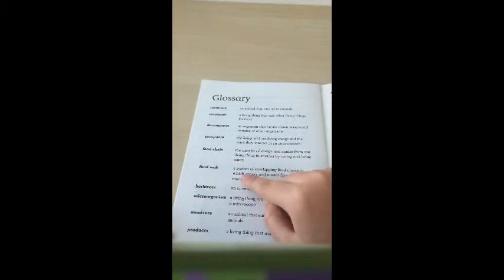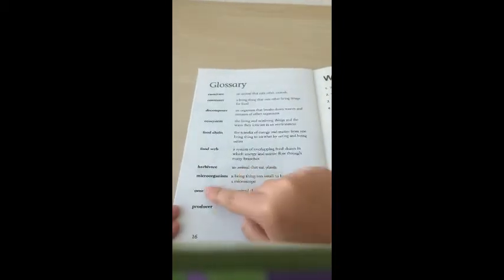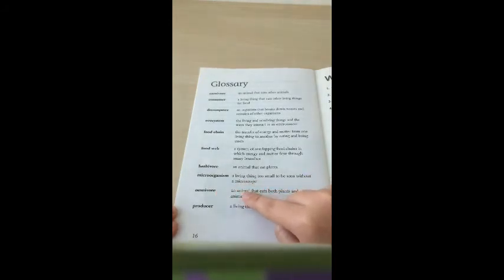Glossary. Food web: A system of overlapping food chains in which energy and matter flow through many branches. Herbivore: An animal that eats plants. Microorganism: A living thing too small to be seen without a microscope. Omnivore: An animal that eats both plants and animals. Producer: A living thing that makes its own food.